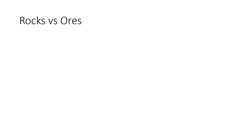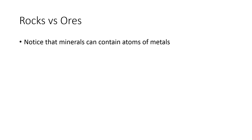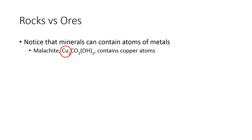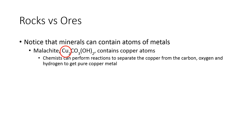What's the difference between a rock and an ore? Notice that minerals contain atoms of metals. Malachite, for example, contains copper atoms — there they are right there in the chemical formula. Chemists can perform reactions that separate the copper atoms from the carbon, hydrogen, and oxygen that makes up the rest of the malachite. When we do that, we can get pure copper metal, which we can then draw into electrical wire, for example, and sell.